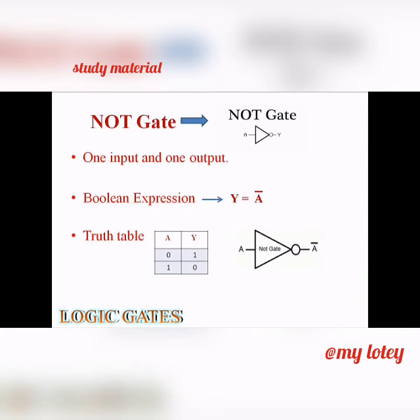The next gate is NOT gate. You can see the symbol of NOT gate, which includes only one input and one output value. Its boolean expression is y is equal to A bar, where A bar stands for complement of A. The complement of 0 is 1 and the complement of 1 is 0. You can see the output values obtained in the NOT gate as seen in the truth table.